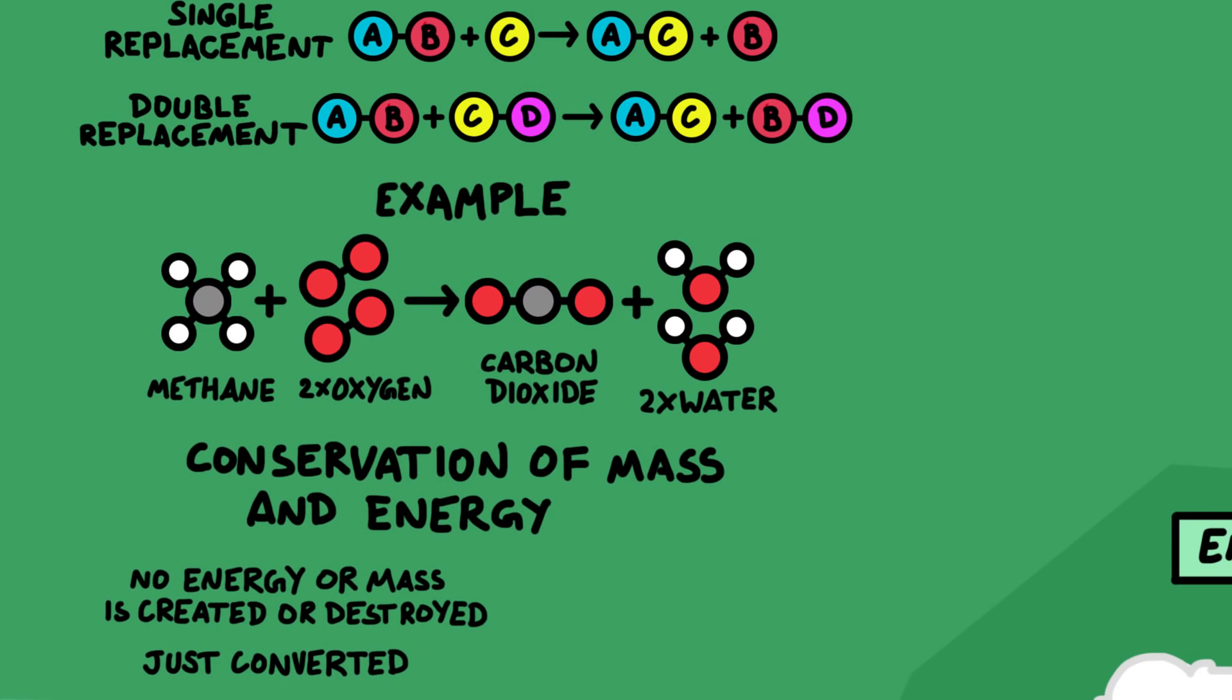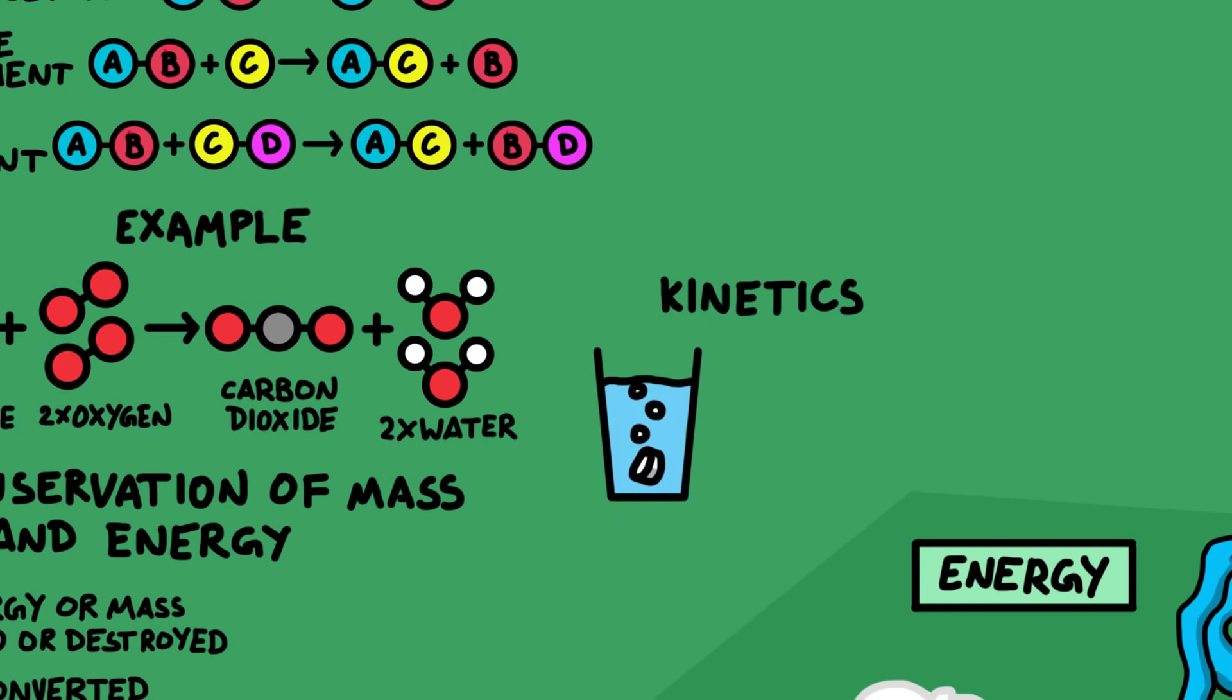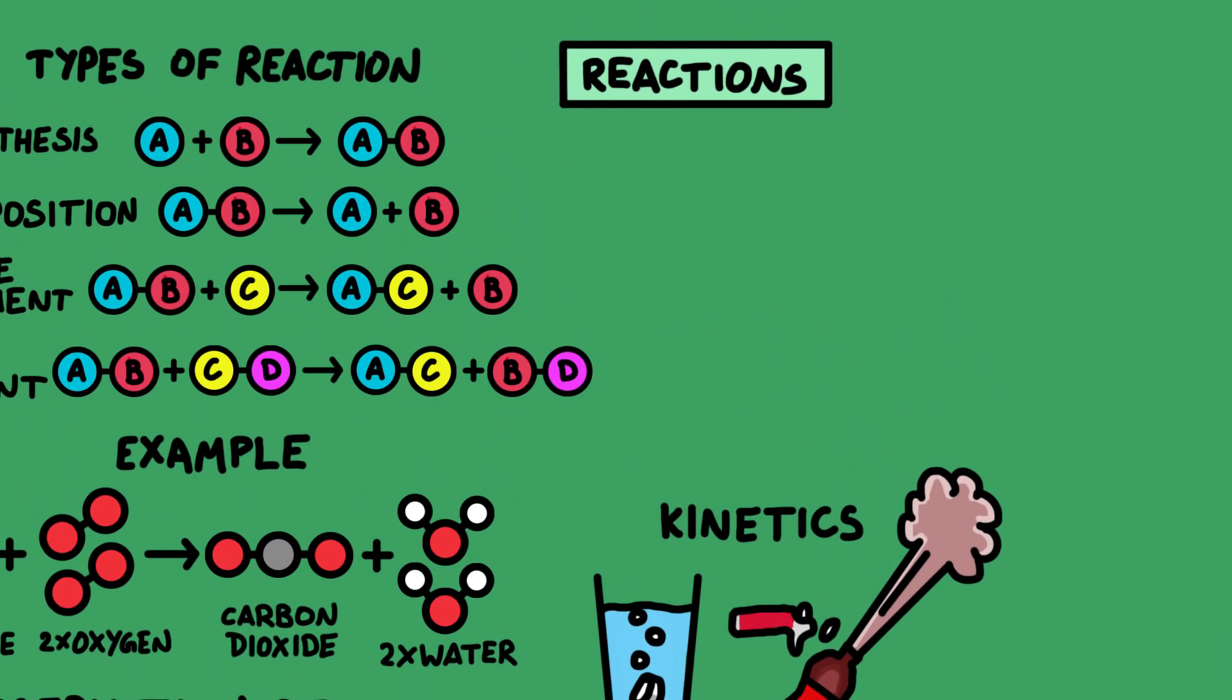Kinetics is the study of how fast reactions happen, and the things that control what the reaction rates are. A reaction where electrons are transferred from one reactant to another is called an oxidation-reduction reaction, or a redox reaction for short.